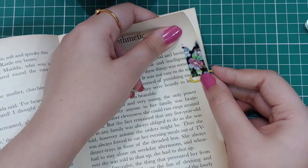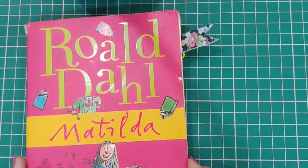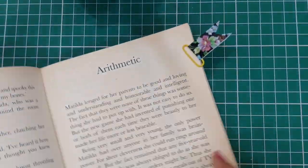Your bookmark number one is done. You can mark the page of your book from which you have to continue reading, you can mark the line from where you have to continue reading, and these bookmarks are very small and very beautiful. Now let's move on to the next bookmark.